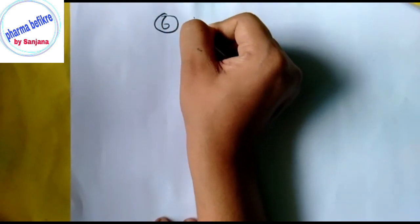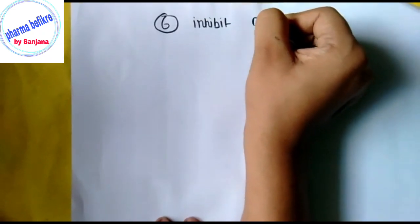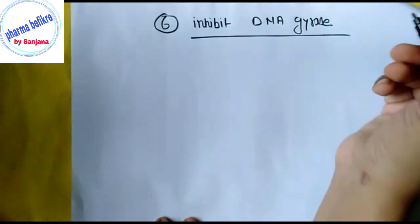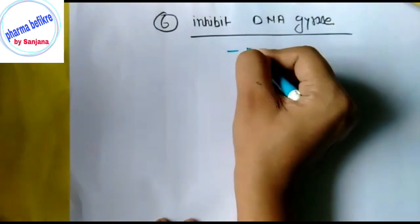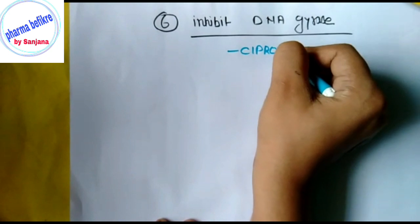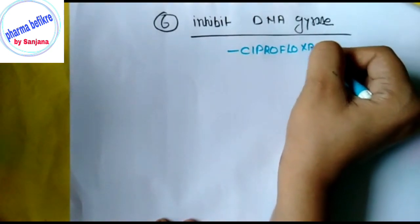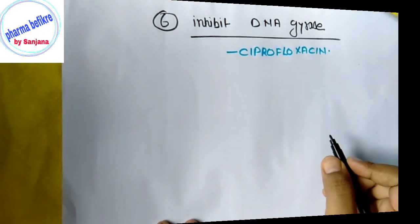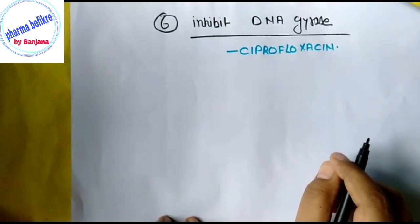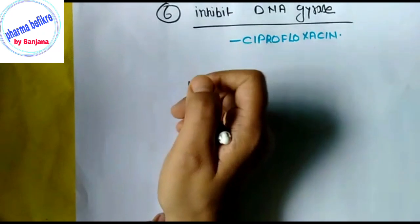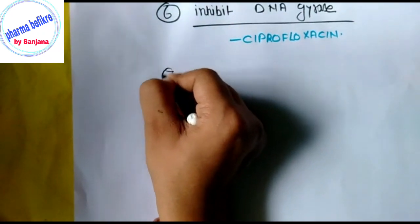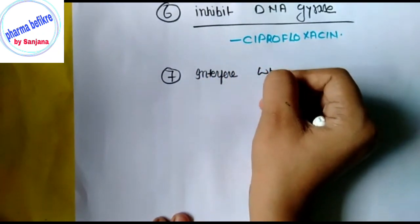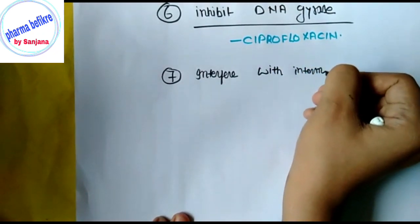The sixth group consists of drugs that inhibit DNA gyrase. Again, only one drug comes in this group — that is Ciprofloxacin.